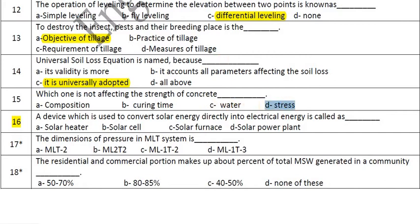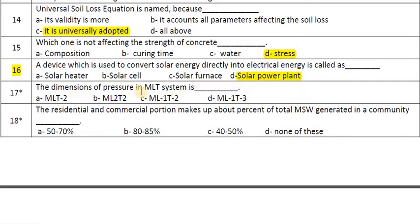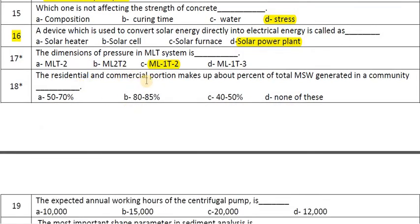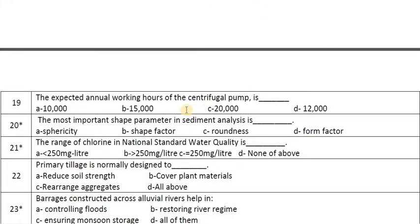Stress is not a factor affecting the strength of concrete. A device used to convert solar energy directly into electrical energy is known as a solar power plant. The dimensions of pressure in the MLT system are ML⁻¹T⁻². The residential and commercial portion makes up about 15 to 70 percent of total MSW generated in a community.